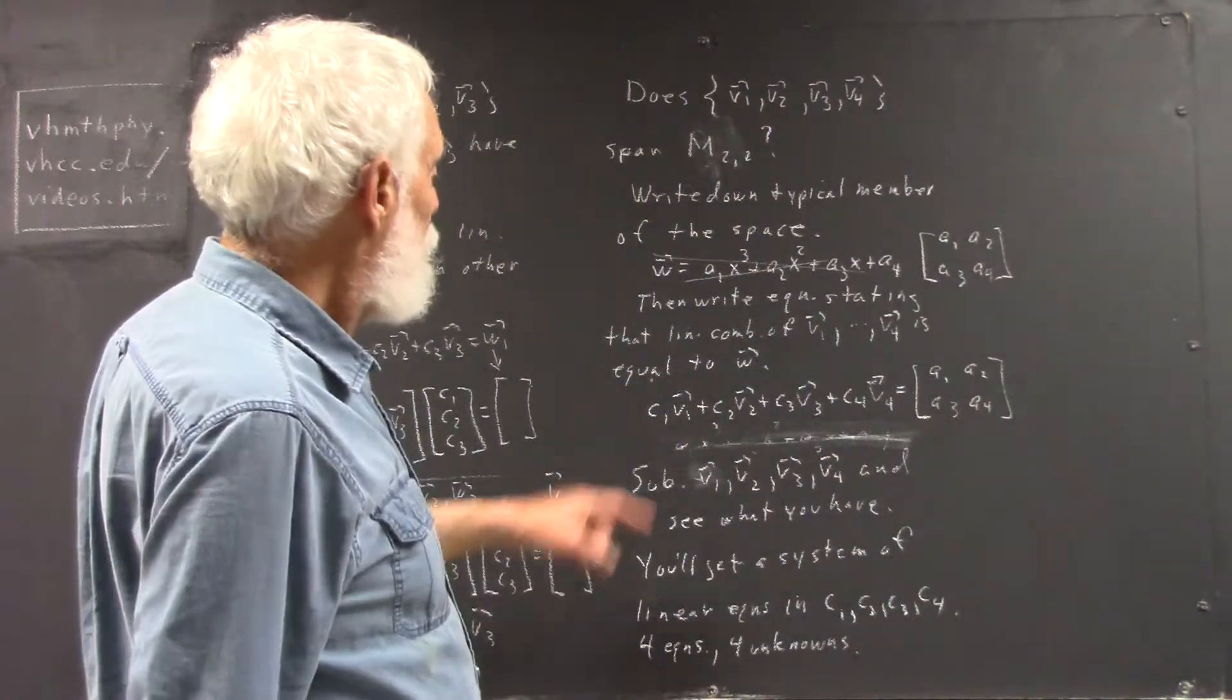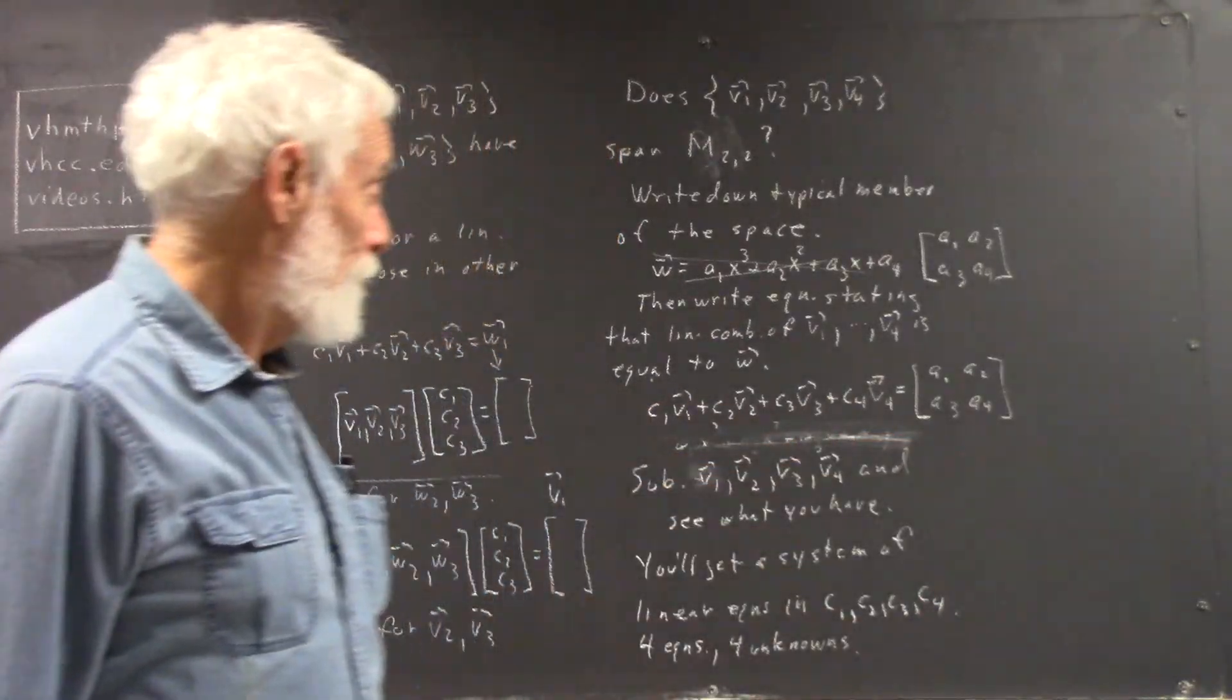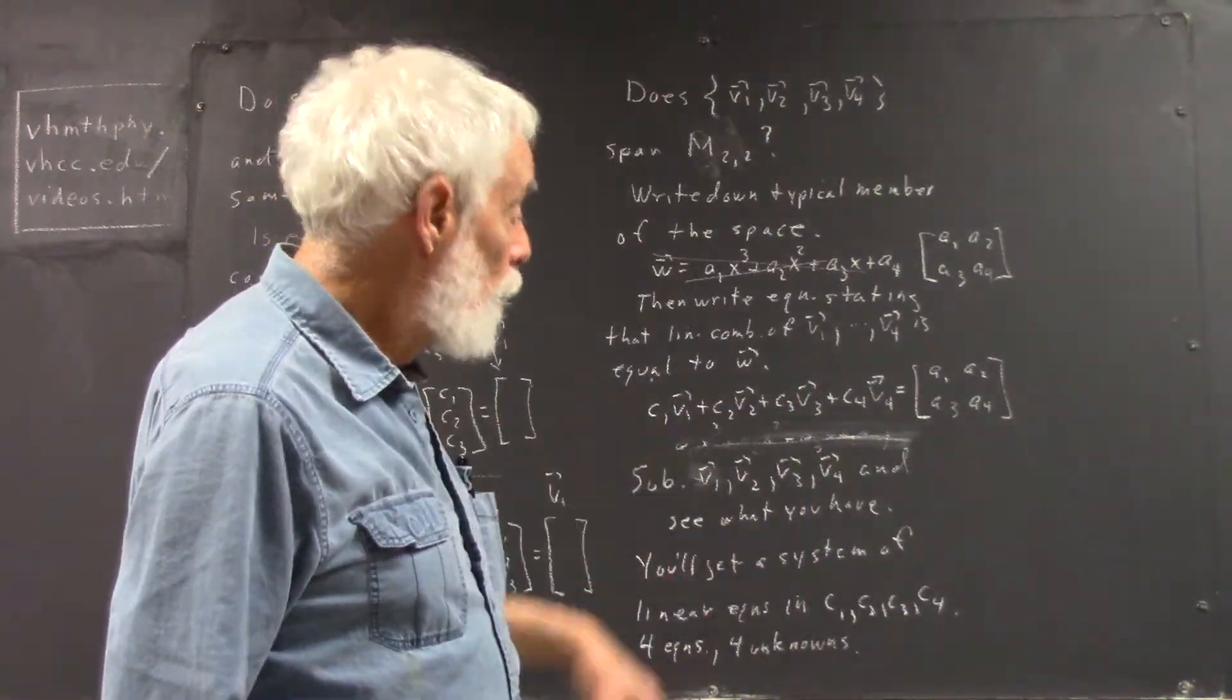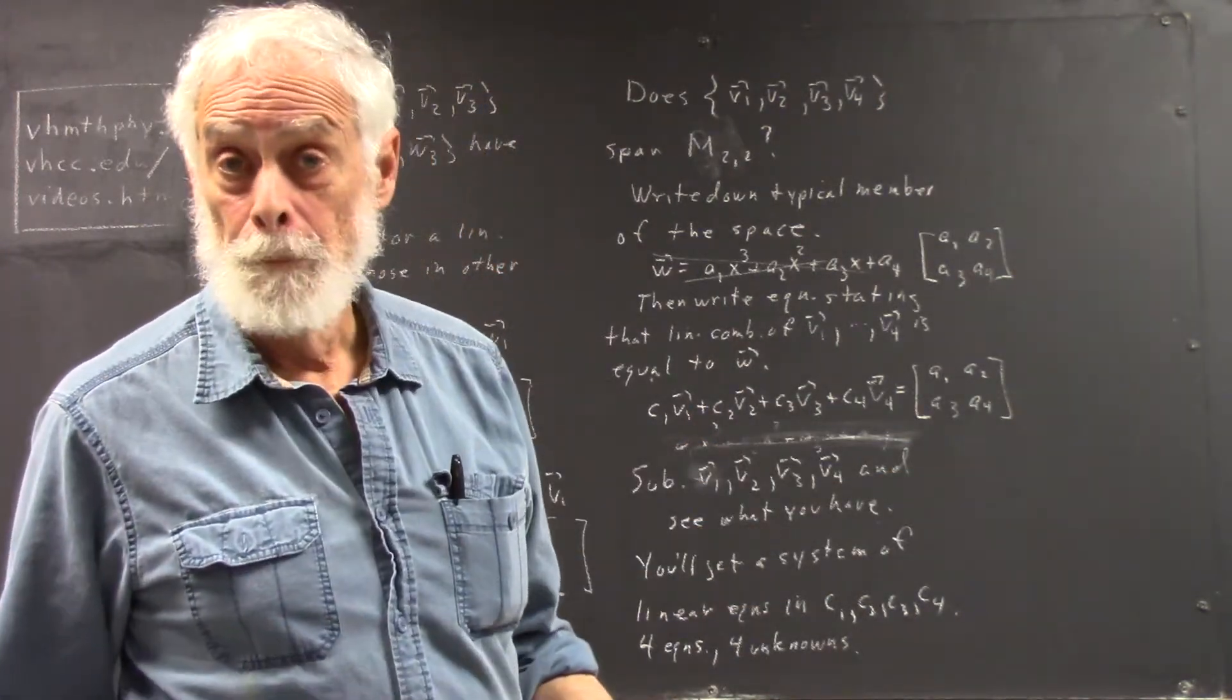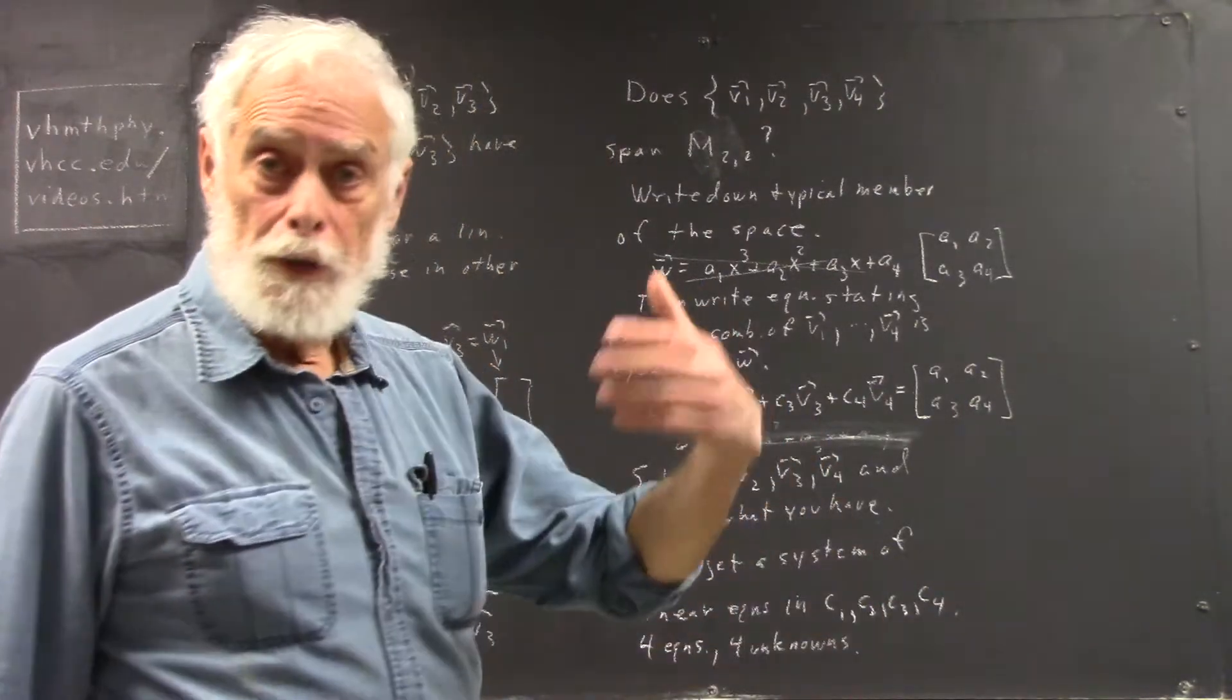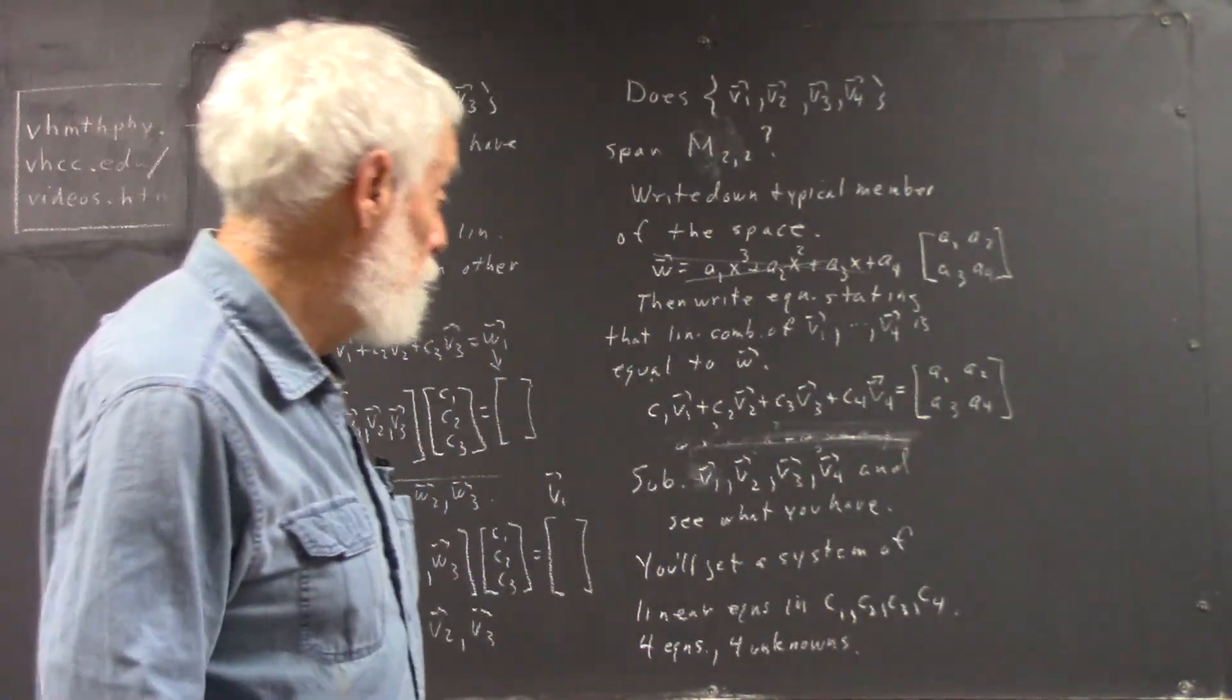And now the V1, V2, V3, V4 wouldn't be polynomials. They would be 2 by 2 matrices. And when you write out this equation and look at it, you'll see that it gives you, again, four equations in the four unknowns, C1, C2, C3, C4. And then you're in familiar territory. You can solve those equations by writing a matrix equation. You can solve them by doing an augmented matrix and reduce it. You can solve them just by straightforward elimination.